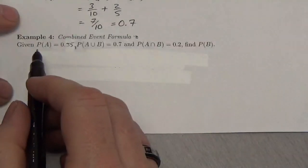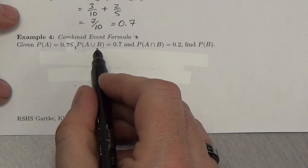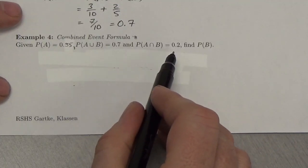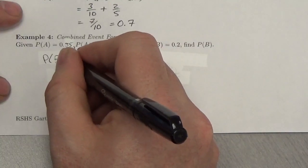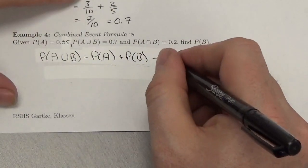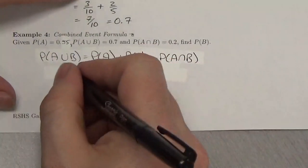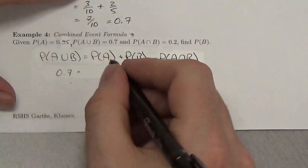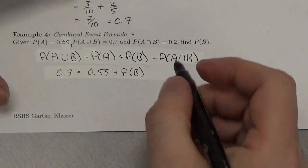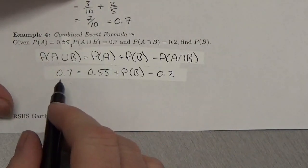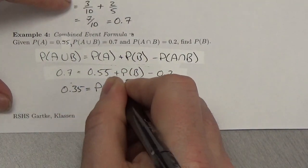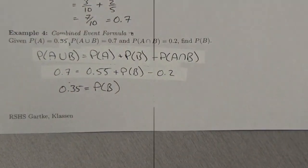Given P(A) = 0.55, P(A union B) = 0.7, and P(A intersection B) = 0.2, find P(B). Since the intersection is non-zero, these are non-mutually exclusive events. Using the formula: P(A union B) = P(A) + P(B) − P(A intersection B), we get 0.7 = 0.55 + P(B) − 0.2, so P(B) = 0.35.